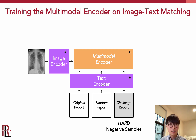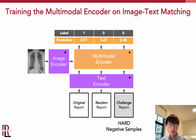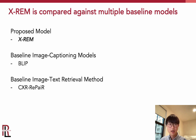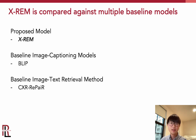We feed these embeddings into the multimodal encoder, which learns to classify the first report as positive and the other two as negative. We compare our proposed model with a baseline image captioning model generated based on CLIP and BLIP, as well as a pre-existing image text retrieval baseline called CXR Repair.